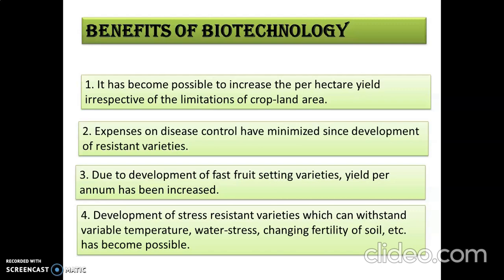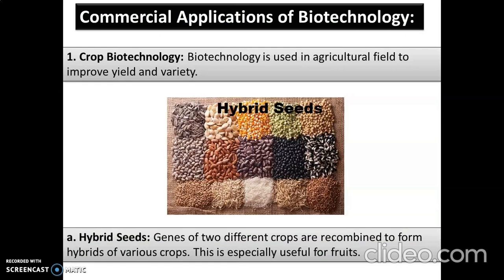Coming to commercial applications, the first is crop biotechnology, which is used in the agricultural field to improve yield and variety. Among these, first we have hybrid seeds. Genes of two different crops are recombined to form hybrids of various crops. Gene manipulation or hybridization is done where two different genes are mixed and then hybrid seeds are produced.